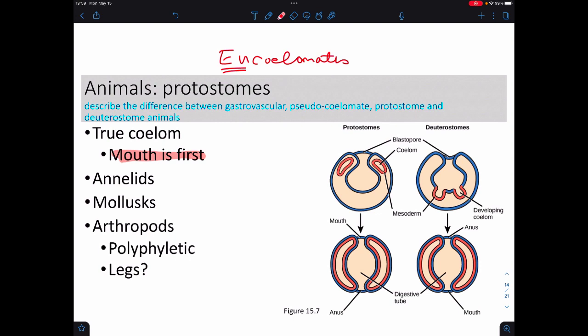Protostomes literally means the mouth is first, and this has to do with how the body cavity is formed, and the gastrovascular tract is formed. So, this here, we're calling it the digestive tube, this is the GI tract, or the intestinal tract or something like that. So, it turns out the first hole that forms turns out to be the mouth, and we call those protostomes.